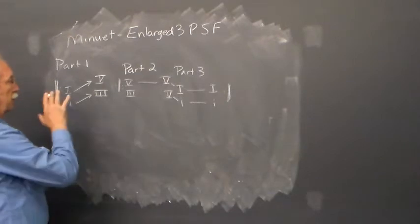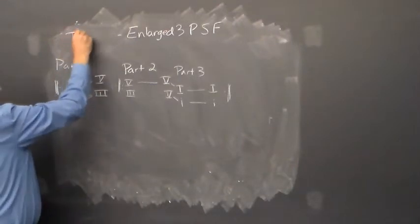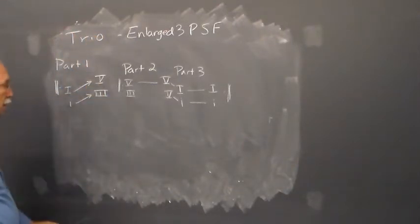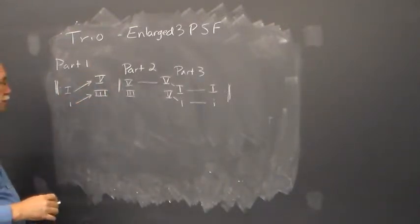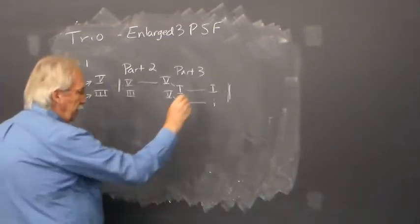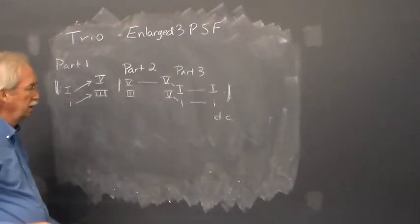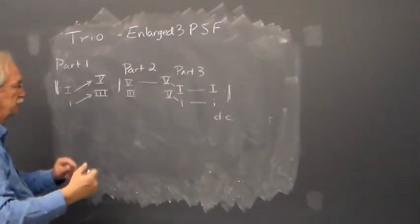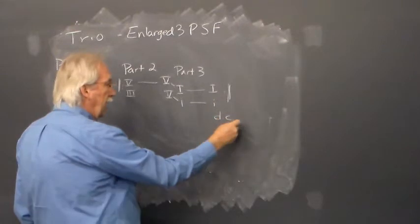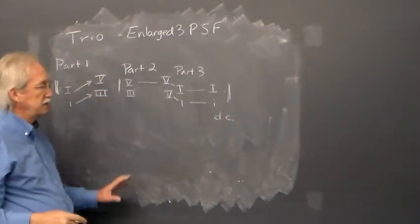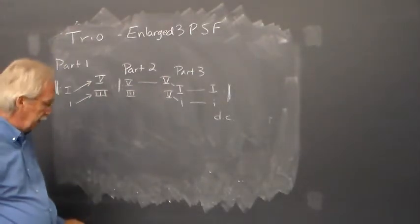You're going to find exactly the same setup for the trio section. The trio has this same construction, and at the end would be the da capo. You look to see if that is included in the score. Sometimes a composer will not write da capo, but instead will write out the repeat of the minuet. When that happens, there's usually a reason for it.